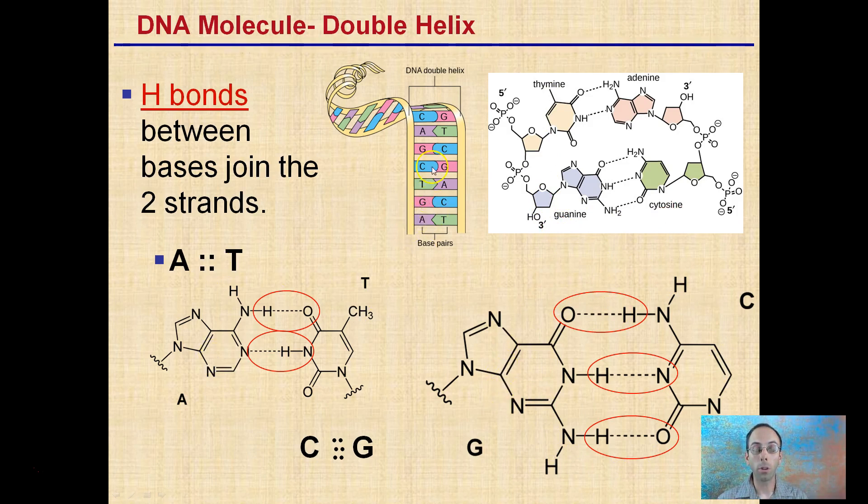While two bonds is strong enough to hold the two strands together, three bonds are stronger than two bonds. A way to remember this is C has this curved shape, as does G. They have a similar curved shape. Therefore, they bind tighter and stronger with three hydrogen bonds. And T, remember, only has two.